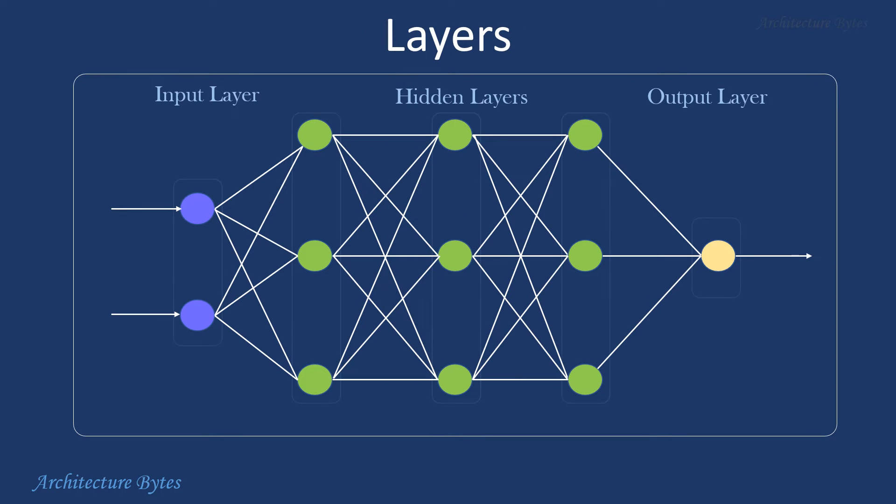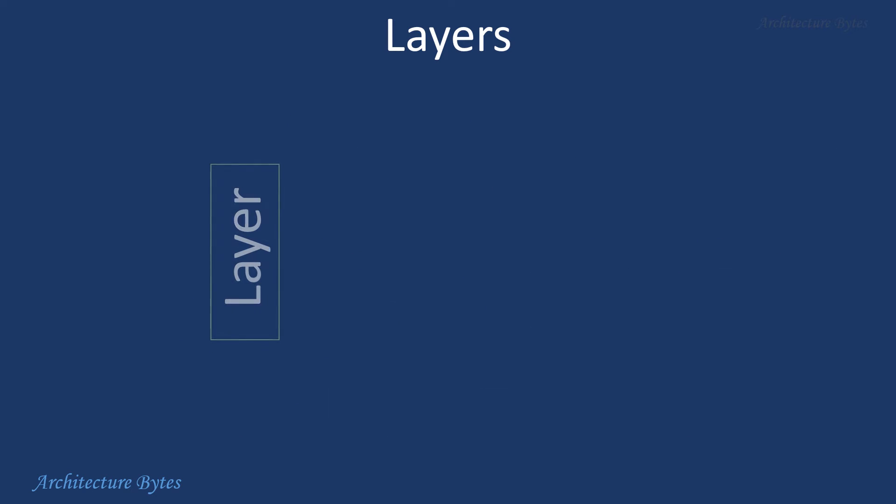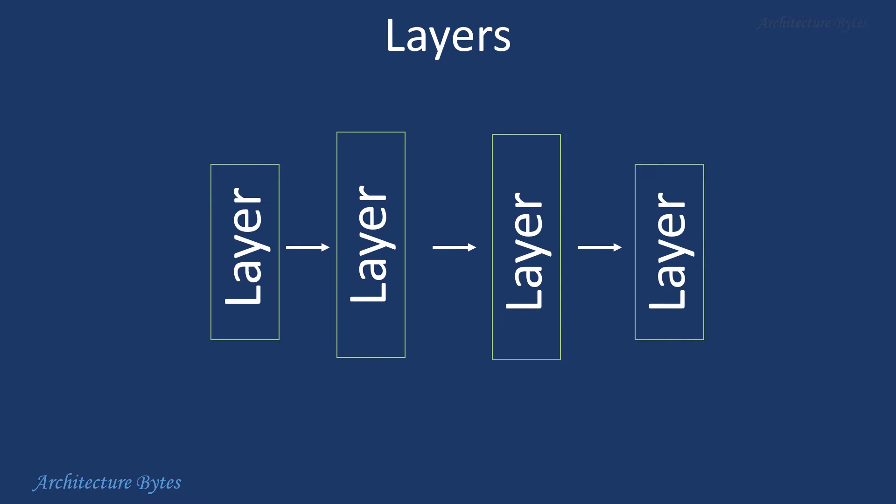A layer consists of a set of neurons and performs specific operations on the input data. They are one of the fundamental building blocks of neural networks. There are input and output layers at the edges and the layers in between are called hidden layers. Each layer plays a specific role in transforming and extracting features from the data.